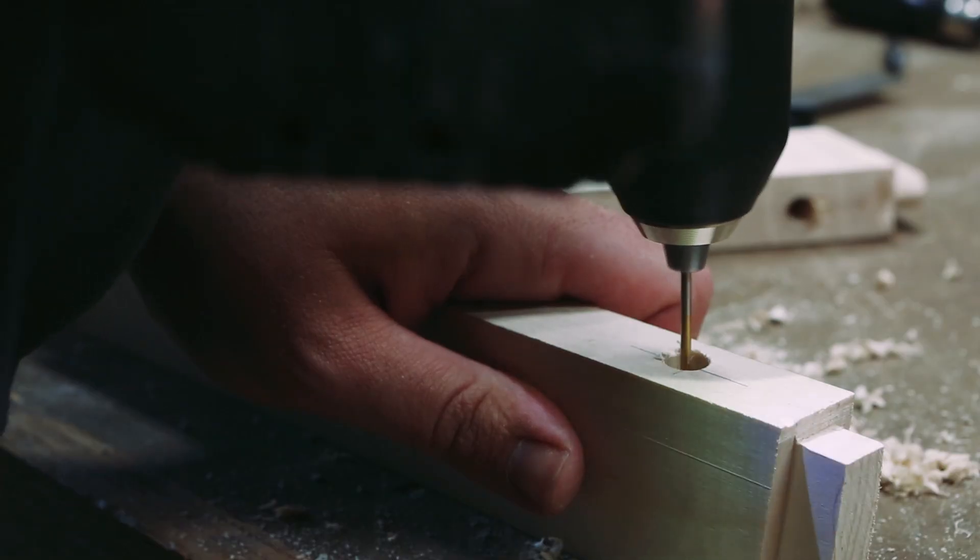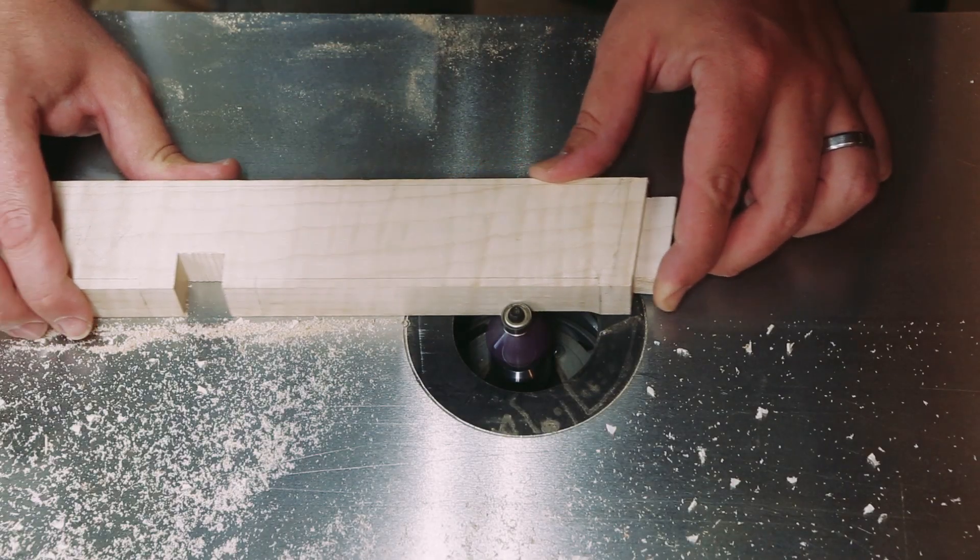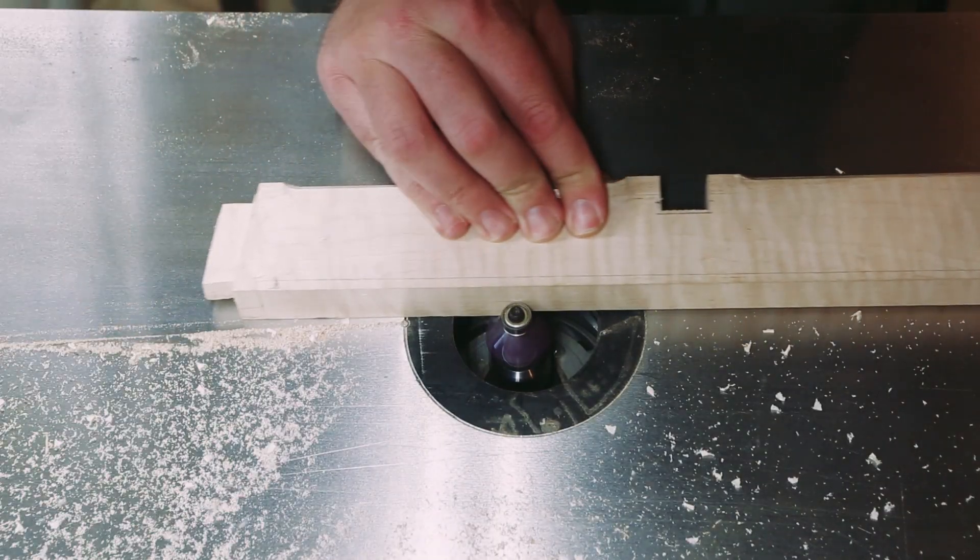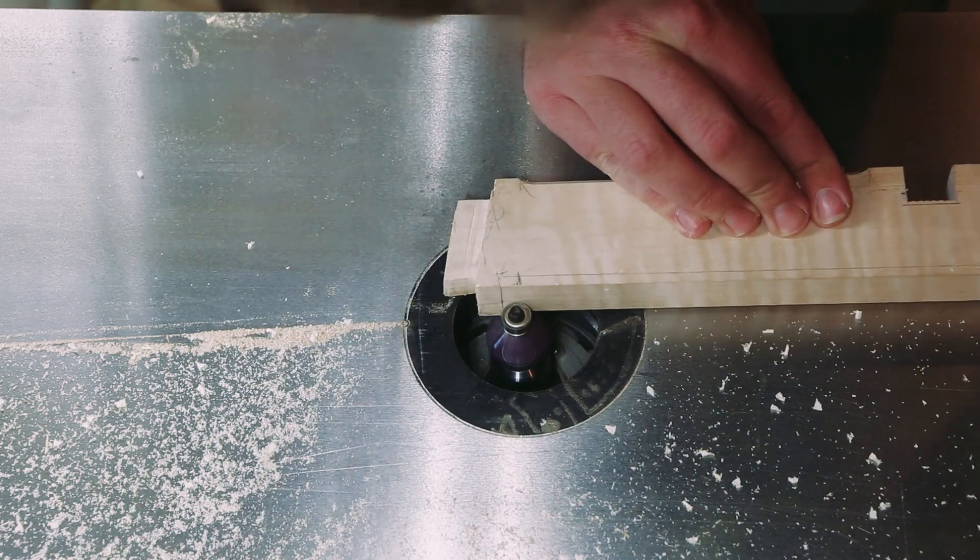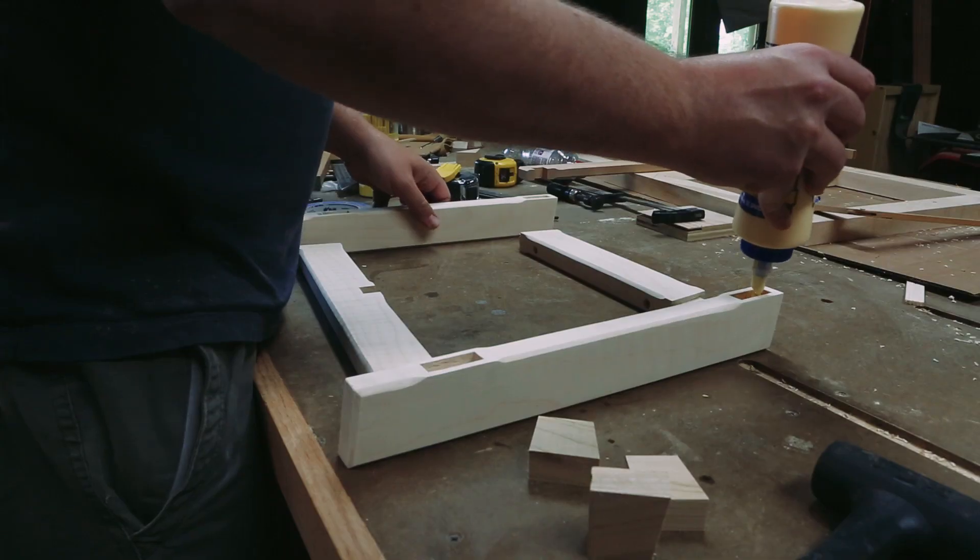I drilled some big holes and some pilot holes in the top stretchers to attach the top later. To keep the edges a little safer for the kid, I put a stopped chamfer profile on all the base pieces. I pre-sanded everything, then assembled the base with glue.